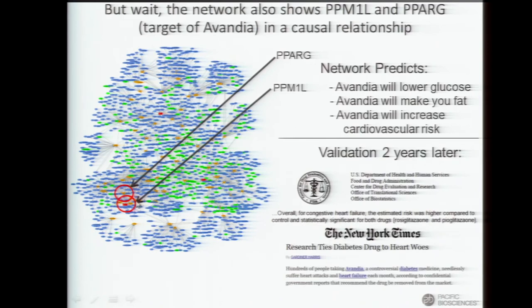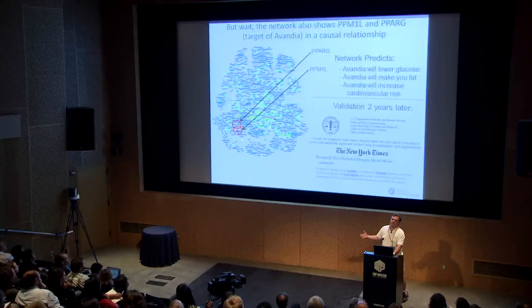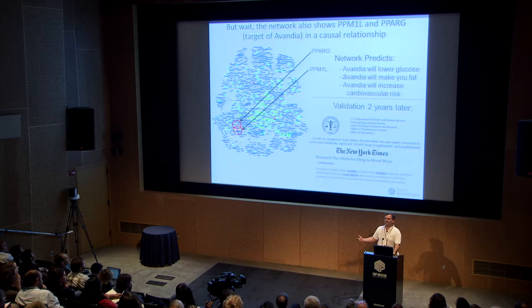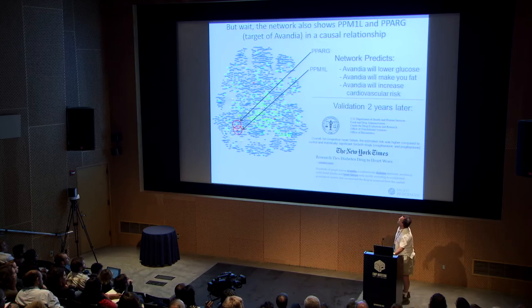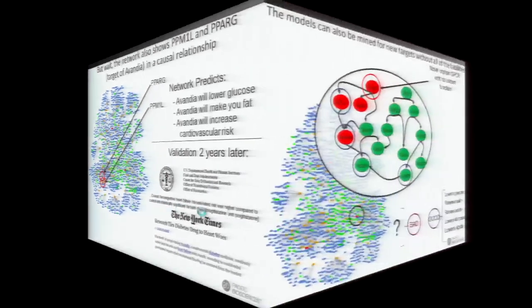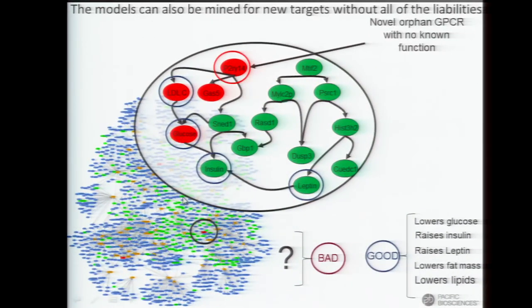What was interesting was that PPM1L is located in the network next to PPAR gamma — they're in the same part of the network, interacting in the statistical sense. What do we know about PPAR gamma? Rosiglitazone was the drug targeting PPAR gamma for treatment of type 2 diabetes, marketed as Avandia. And what we know about Avandia is that it lowers your glucose, makes you fatter, and increases cardiovascular risk — just as we predicted from the network. This sort of thing could be avoided by having this more context-rich approach. That program was under development at Merck but got halted given the type of information we were able to provide.